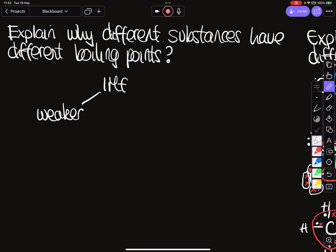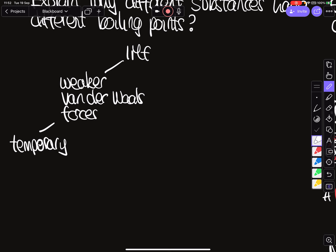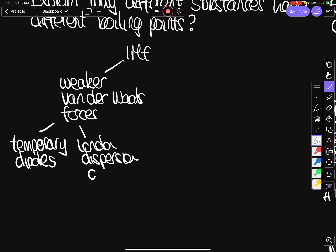The first and weakest intermolecular force is van der Waals forces. On mark schemes these may be called temporary dipoles or London dispersion forces. For split fractions of a second, there's an overabundance of electrons in one part of a molecule, which influences a neighbouring nucleus. The key point is that every molecule has van der Waals forces.